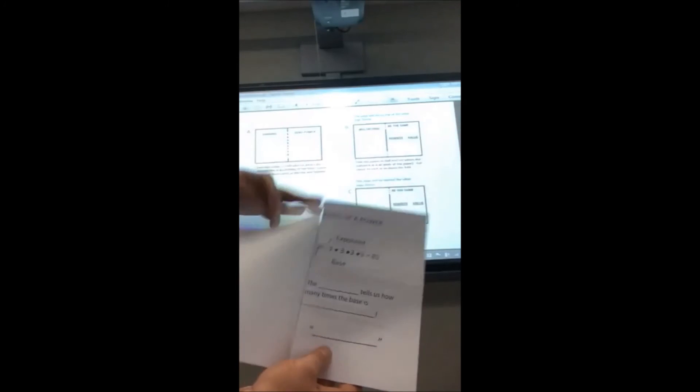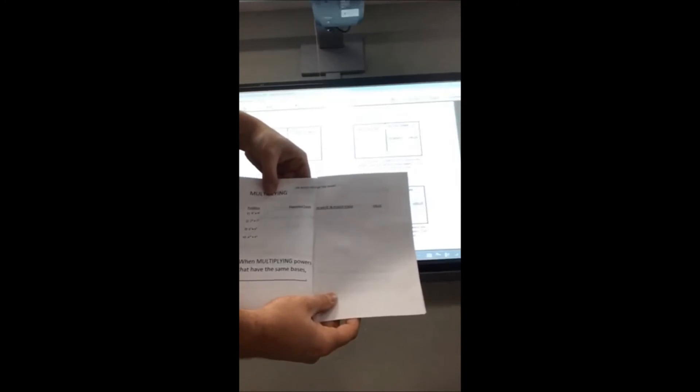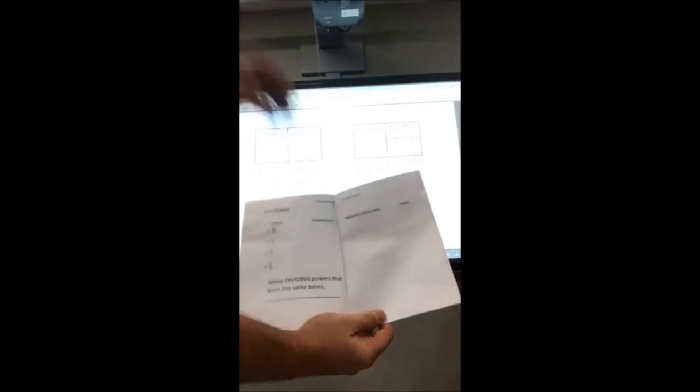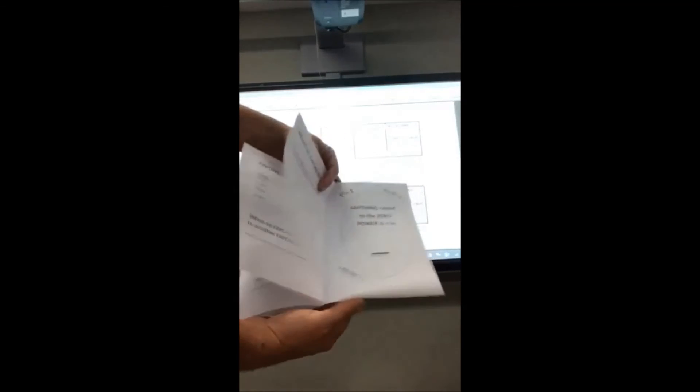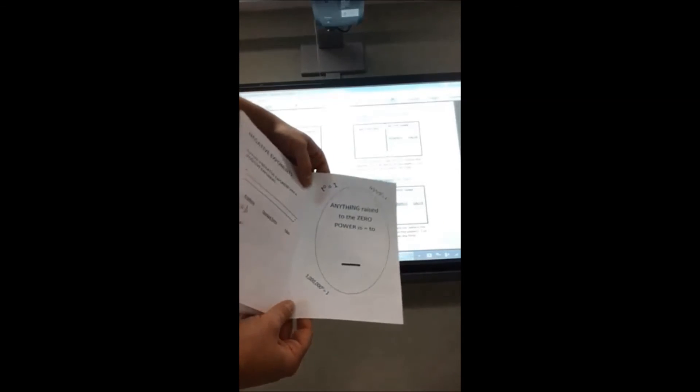The pages make this cool little booklet that I came up with. If you did this correctly, it'll be in this order: parts of a power, multiplying, dividing, exponent to an exponent, negative exponents, and then anything raised to the zero power. Voila, hope this helps.